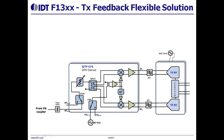IDT-F3070's DPD demodulator is a flexible transmitter feedback solution. Used with a dual ADC as a complex IF demodulator, it virtually doubles the ADC sampling rate, so a dual 500 MHz ADC is applicable for 500 MHz IF band DPD. This is a big advantage.